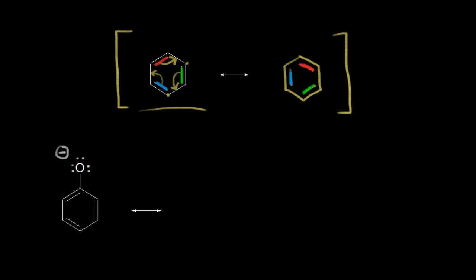Next let's look at the phenoxide anion. I'm going to color code the electrons — these electrons in red, these right here in green, and then these in blue — just like we did with the benzene ring above.